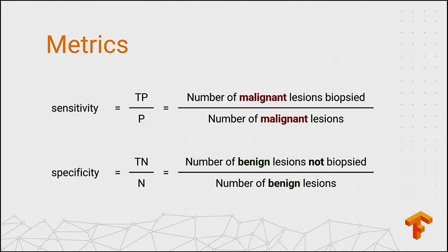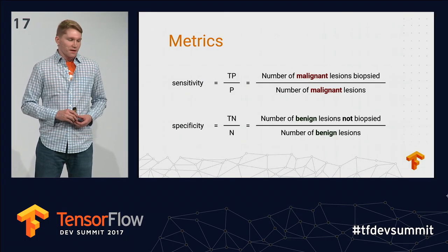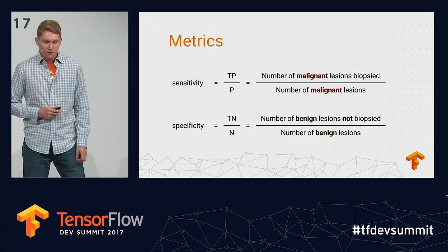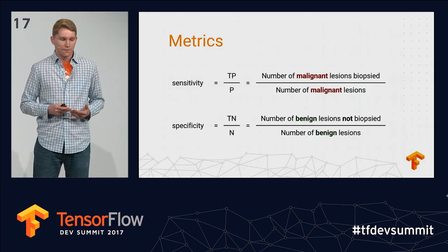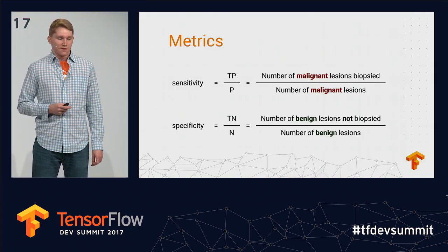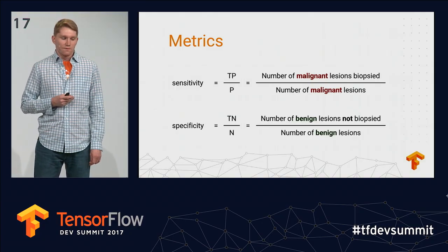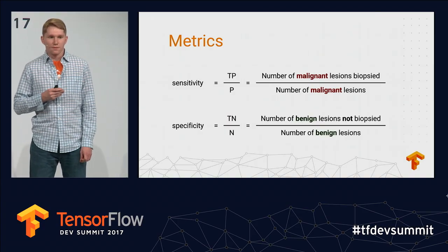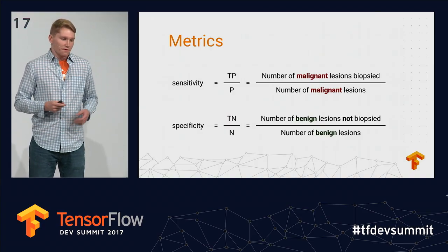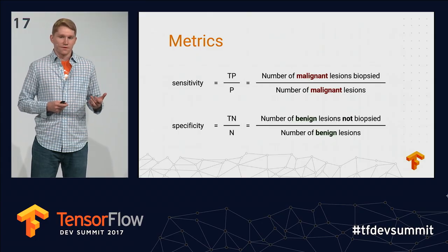The next step is evaluation. We use two metrics to compare with dermatologists: sensitivity, known as the true positive rate, and specificity, known as the true negative rate. We show dermatologists images of benign and malignant lesions. Sensitivity is the percent of malignant lesions they ordered a biopsy for; specificity is the percent of benign lesions they did not order a biopsy for. A biopsy goes to a pathologist, resulting in a near-perfect diagnosis.